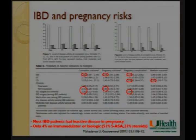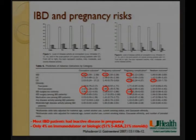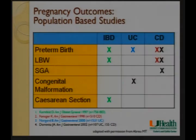Secondly, only one out of 25 patients in this study was on stronger therapy with an immunomodulator or biologic, suggesting these patients had very mild disease. We can't extrapolate this data to those on anti-TNF or thiopurines. Half were on mesalamine therapy and about a fifth were on steroids. So there is a slight increased risk of negative conception and pregnancy outcomes — and the next question is what those specific outcomes are.